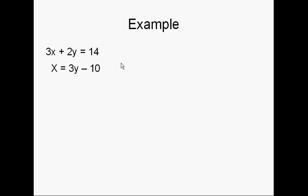Here's our first system: 3x plus 2y equals 14, and x equals 3y minus 10. This system looks a little bit different from the ones that you did when you were graphing. Namely, in that this tells us what x is. It tells us that x is equal to 3y minus 10.